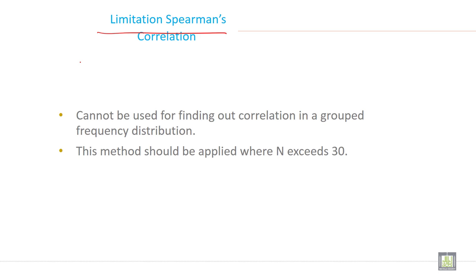This method should be applied where N exceeds 30. This method should be applied where sample size exceeds 30. So these are the two important limitations of Spearman rank correlation.